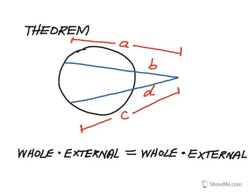In the next theorem, when we have two secants drawn through a circle from an external point, as the blue secants are in this diagram, the whole secant length — shown as A — when multiplied by the external piece of the secant outside the circle, so A times B, will always be equal to the whole other secant times the external piece of that secant, so C times D. The product of whole times external piece equals the product of whole times external piece.